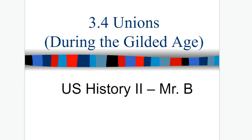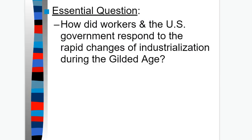We are in Chapter 3, Section 4, and what we're going to be talking about are unions — groups of people who come together to fight for workers' rights, especially during the Gilded Age. I want you to think about how workers in the United States government responded to the rapid changes of industrialization during the Gilded Age.